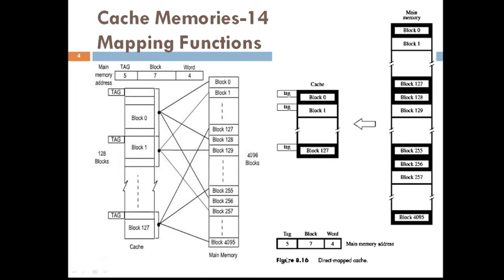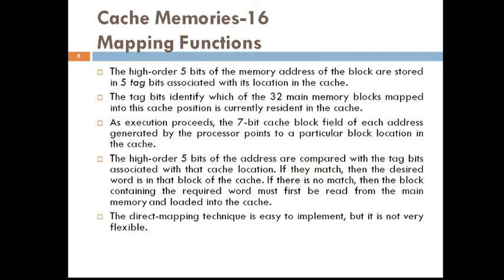These tag bits identify which of the 32 blocks mapped onto the cache position are currently resident in the cache. As execution proceeds, the 7-bit cache block field of each address generated by the processor points to a particular block location in the cache. The higher-order 5 bits (the MSB) are compared with the tag bits associated with that particular cache location. If both match, the desired word is in that block of the cache.